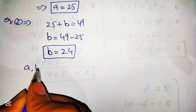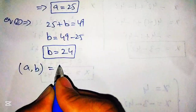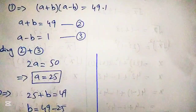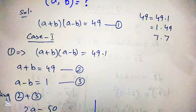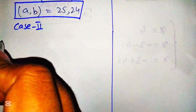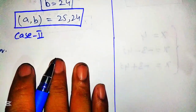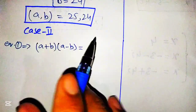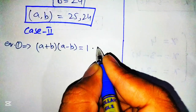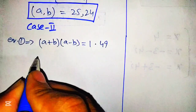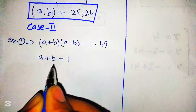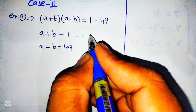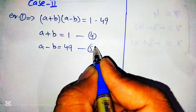The value of b is 24, so the first pair of solutions is (a, b) equals (25, 24). Now for Case 2, we consider the factor pair 1 times 49. Equation 1 implies: a plus b times a minus b equals 49, written as 1 times 49. From this we conclude a plus b equals 1 — equation number 4 — and a minus b equals 49 — equation number 5.